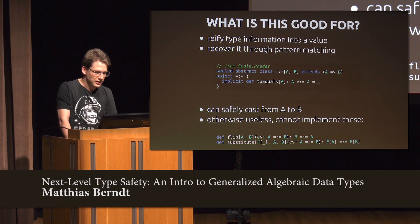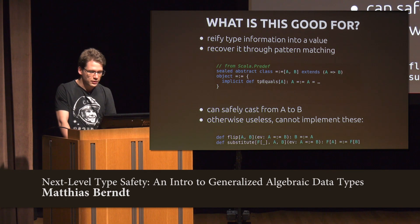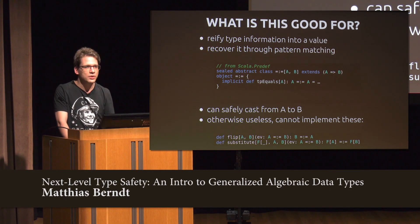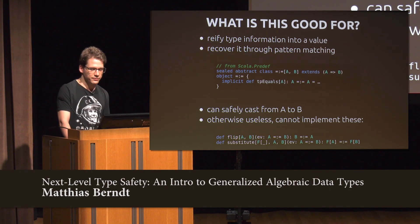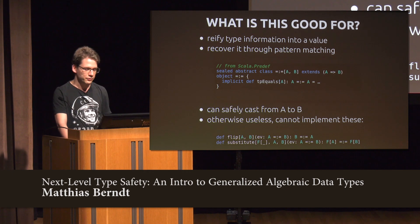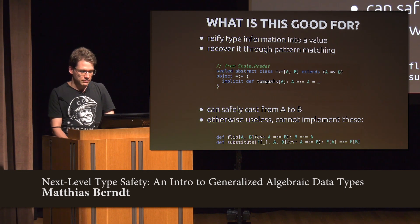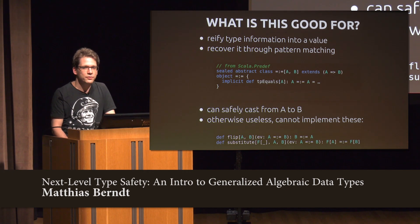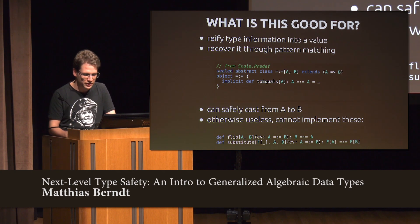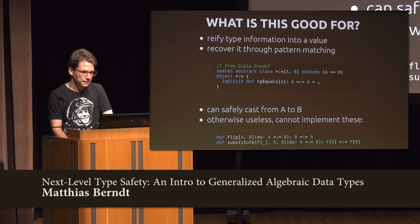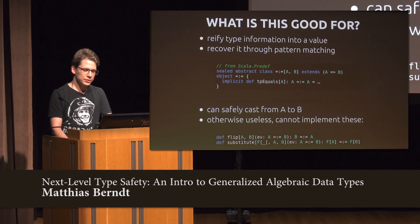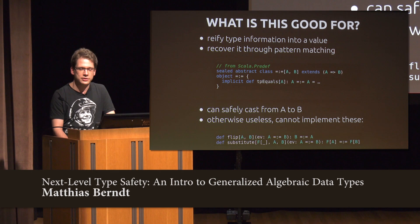There's also the 'substitute' function, which says: if A equals B, then so should F of A and F of B. That is the essence of equality that Leibniz defined, probably around 1700. With GADTs, you can actually implement a more useful version of this.